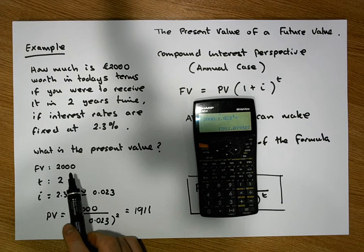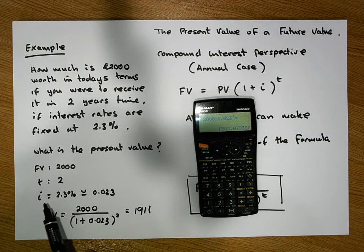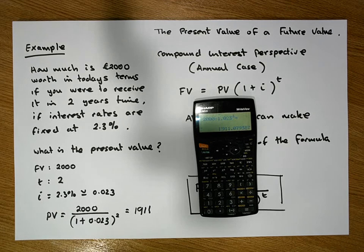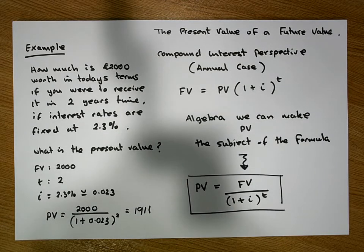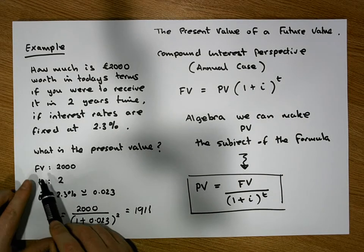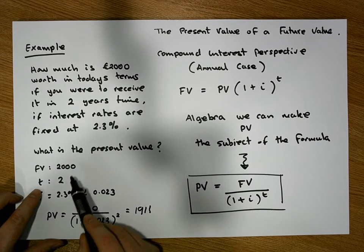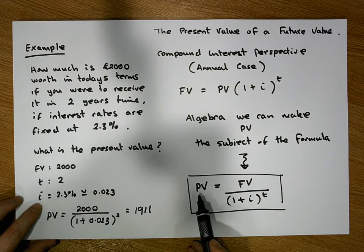So what we know is that 2000 euros in two years' time, if interest rates are running at 2.3%, is equivalent to 1911 euros today. It doesn't matter what the future value is or how many years we need to discount by — it's always the same: you need to know how much you have in the future, how many years you need to discount by, and what the prevailing interest rate is to calculate the present value.